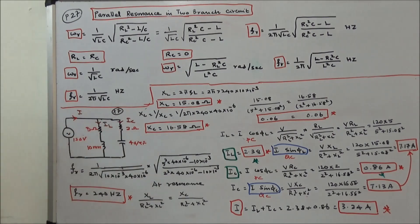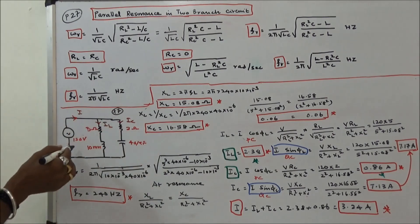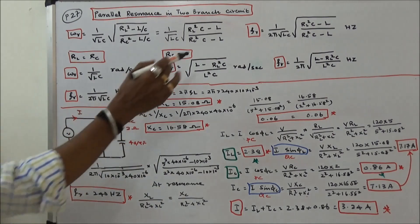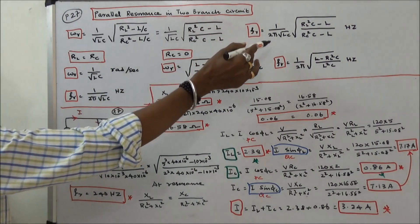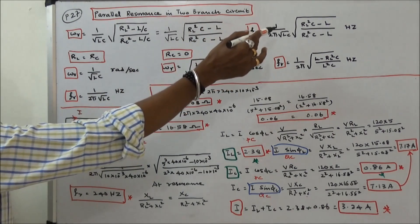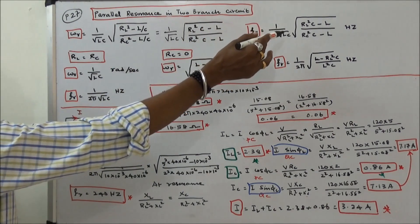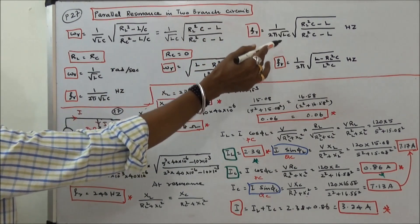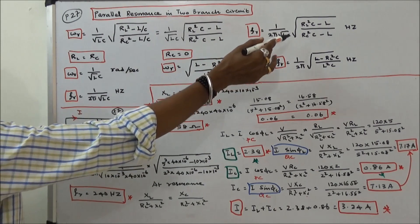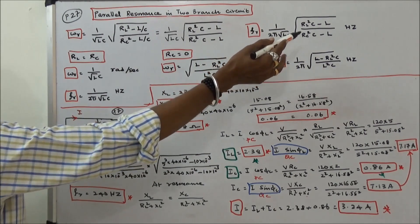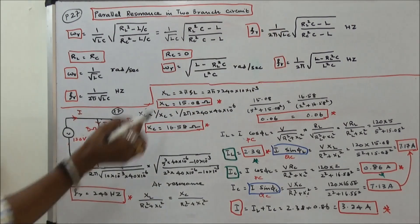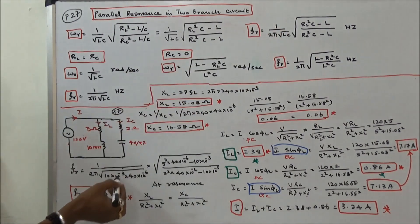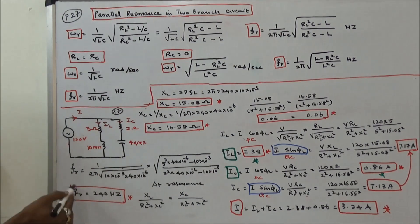First we calculate the resonant frequency. The formula is: f_R = (1 / 2π) × √((1/LC) × (R_L²·C − L) / (R_C²·C − L)) in Hertz. Substituting all the values into this equation, the resonant frequency is 240 Hz.